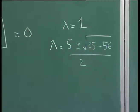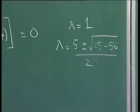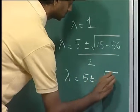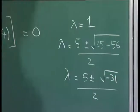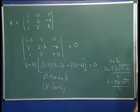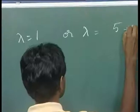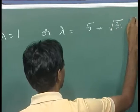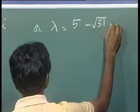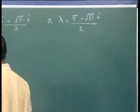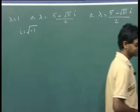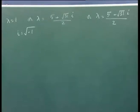When you solve this quadratic, you get lambda equal to 5 plus or minus the square root of 25 minus 56 divided by 2. Since 25 minus 56 is minus 31, we get lambda equal to 5 plus or minus root of minus 31 divided by 2. So this root is imaginary: lambda equals 1, or lambda equals (5 plus or minus root(31) times i) over 2, where i is the square root of minus 1.